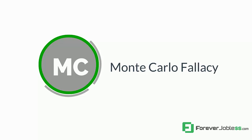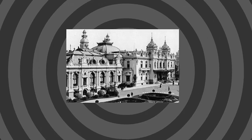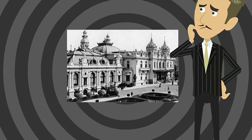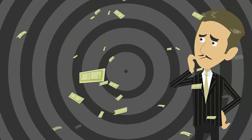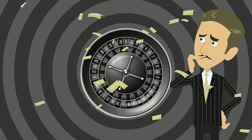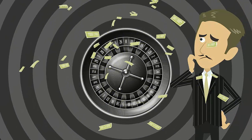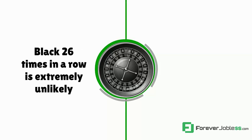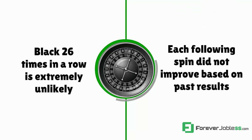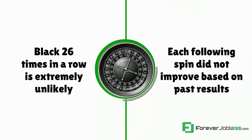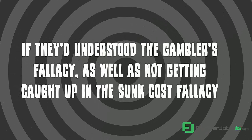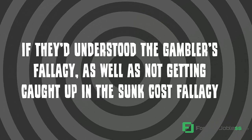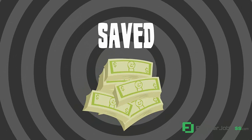The gambler's fallacy is also called the Monte Carlo fallacy because of what happened at the Monte Carlo Casino. In 1913, some gamblers lost millions at the roulette table when it spun black 26 times in a row. They kept betting more and more money, thinking it had to land on red the next time. While the probability of coming up black 26 times in a row is extremely unlikely, the probability of each following spin did not improve based on past results. If they'd understood the gambler's fallacy, as well as not getting caught up in the sunk cost fallacy of needing to make their money back, they would have saved millions of dollars.